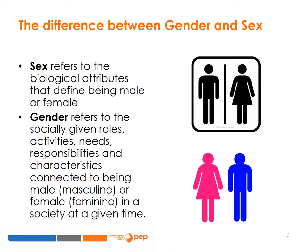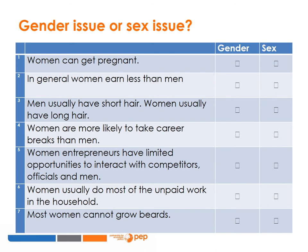For each of the following, select whether the issue is a gender issue or a sex issue. In each case, consider the reason for your selection. Women can get pregnant — is this a gender issue or a sex issue? In general, women earn less than men — is this a gender issue or a sex issue? Men usually have short hair and women usually have long hair — is this a gender issue or a sex issue?